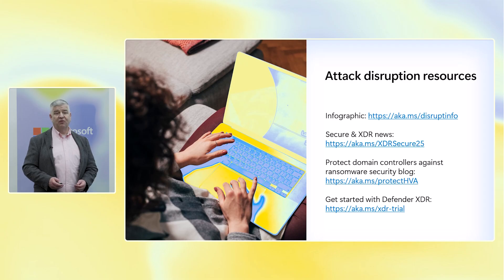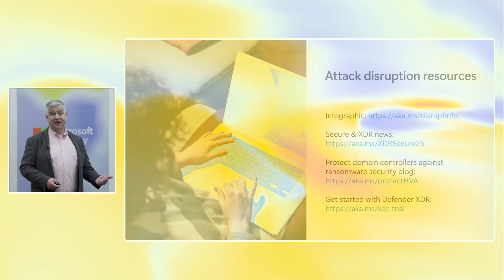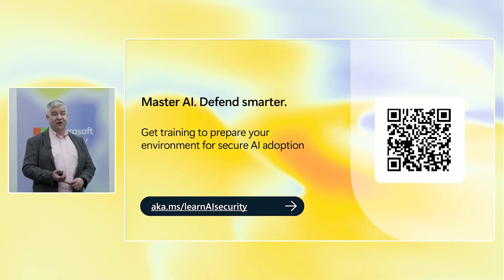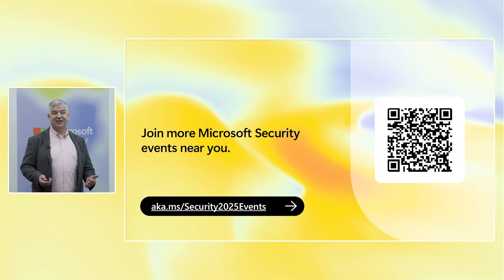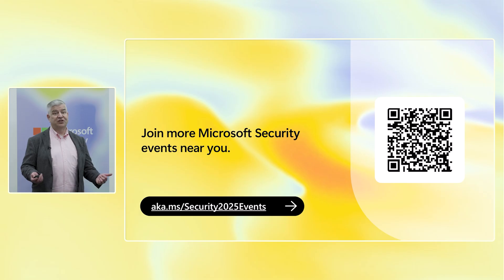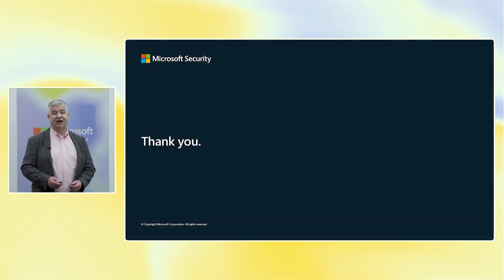So where can you go to learn more about automatic attack disruption? We've got a number of links you can follow leading into things like an infographic as well as pages on learn.microsoft.com. You can also learn more about AI-driven security at Microsoft by scanning these barcodes — we have them covering a number of different subjects, so definitely take a look at all of them. And of course, if you have any questions, reach out and ask your Microsoft team. We're always happy to help. Thank you very much.